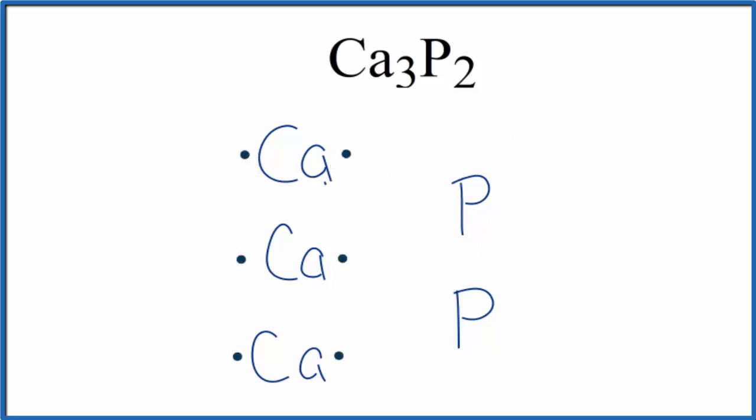Phosphorus is in group 15, sometimes called 5A. It has five valence electrons, each phosphorus. Since we have metal and non-metal bonded together, this is an ionic bond, these electrons will be transferred.